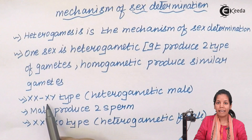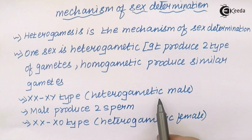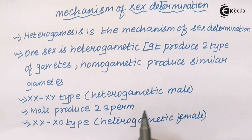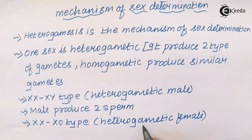The XX and XY type — the heterogammatic male produces two types of sperms, whereas the XX type heterogammatic female produces similar gametes.